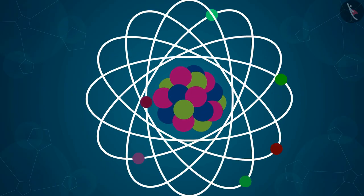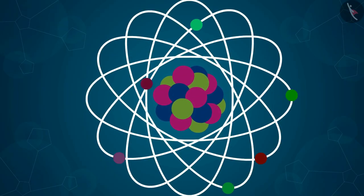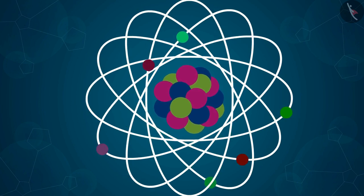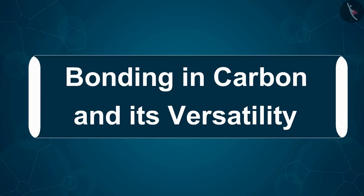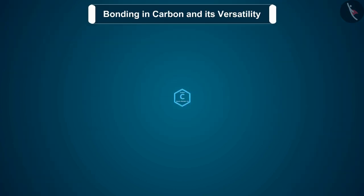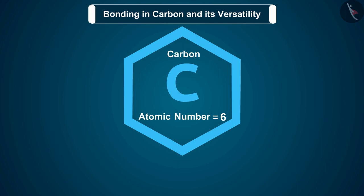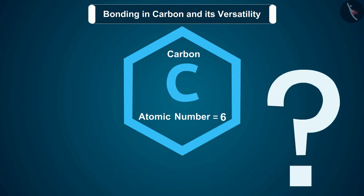Hello friends, welcome to this video session. The topic that we are going to cover in this session is bonding in carbon and its versatility. Before we move ahead with our discussion, we should know that the atomic number of carbon is six, which means that a neutral atom of carbon contains six electrons. How will the distribution of electrons in different orbitals of carbon occur?